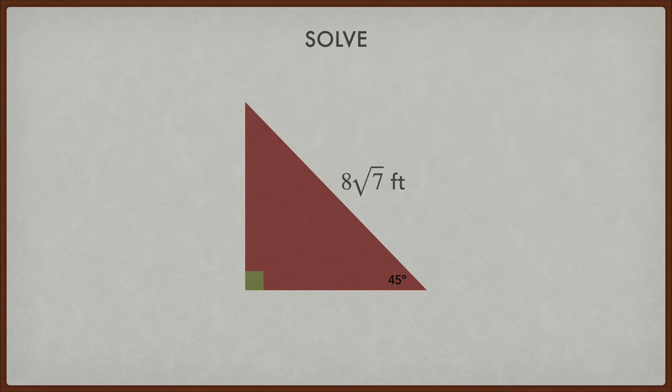Alright, 8 square roots of 7. So this becomes 4 square roots of 7 times the square root of 2. So 4 square roots of 14, and that's what I write over here as well.